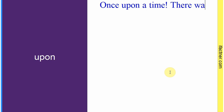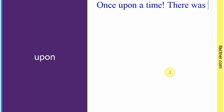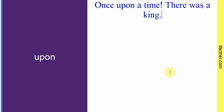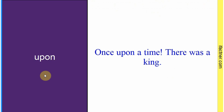Word hai: 'upon'. Sentence: 'Once upon a time, there was a king.' Ek dafa ka zikr hai ek badshah tha aur aage kahani shuru hoti hai. Toh 'upon' ka matlab is soorat mein — 'once upon a time' — ek dafa ka zikr hai. Sentence banaaya: 'Once upon a time, there was a king.'